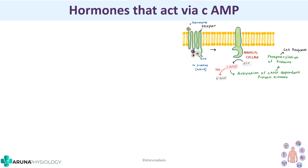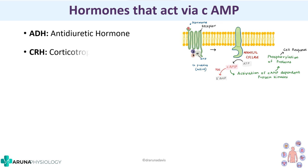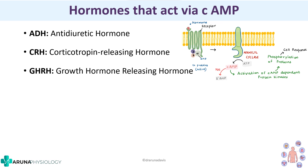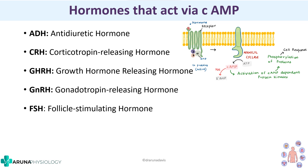Hormones that act via cAMP include: anti-diuretic hormone, corticotropin releasing hormone, growth hormone releasing hormone, gonadotropin releasing hormone, follicle stimulating hormone, and luteinizing hormone. This completes the adenylyl cyclase cAMP system.